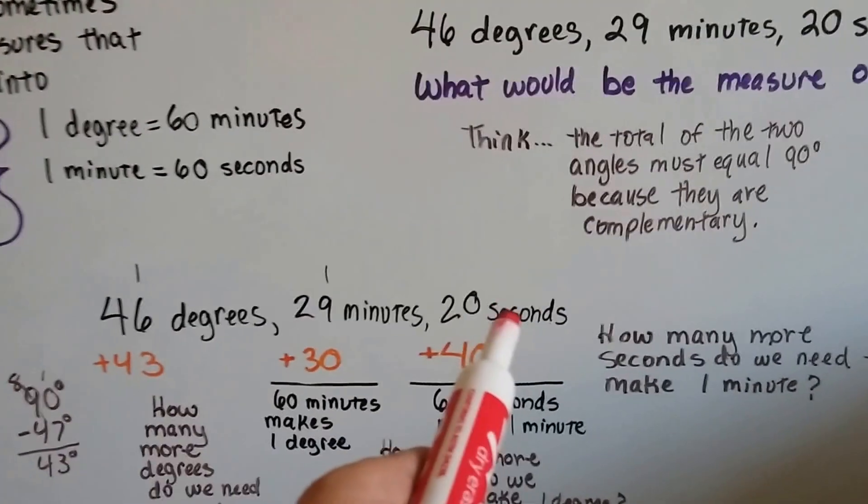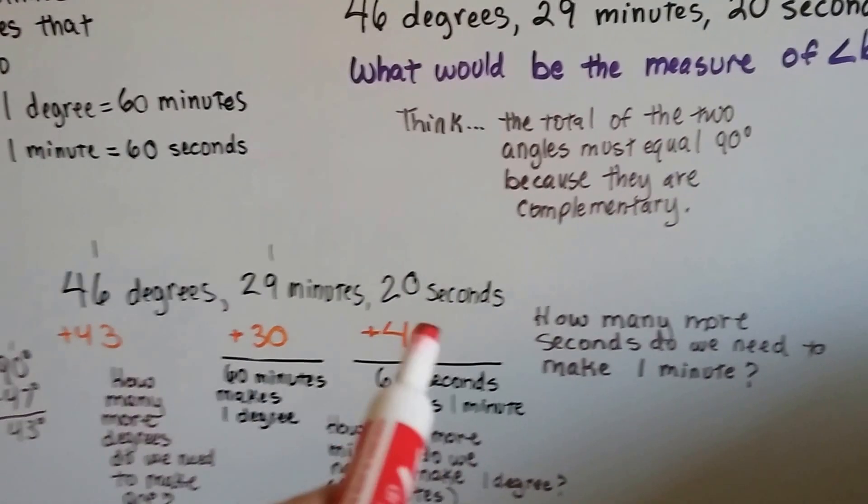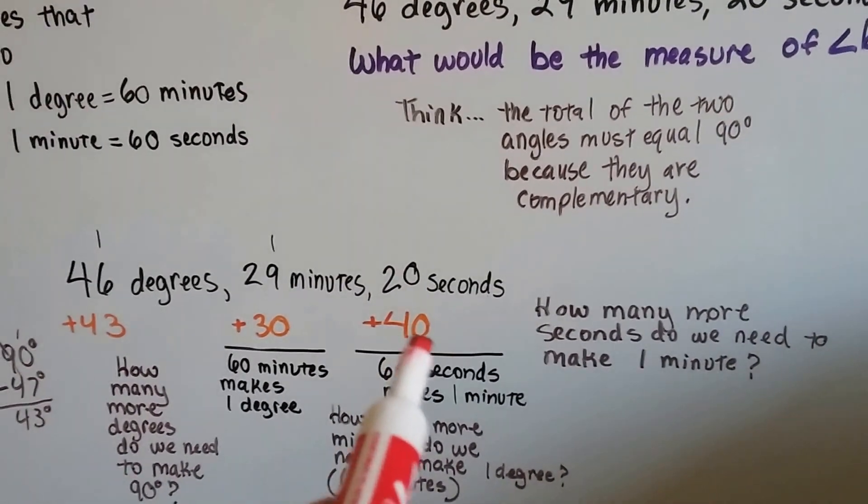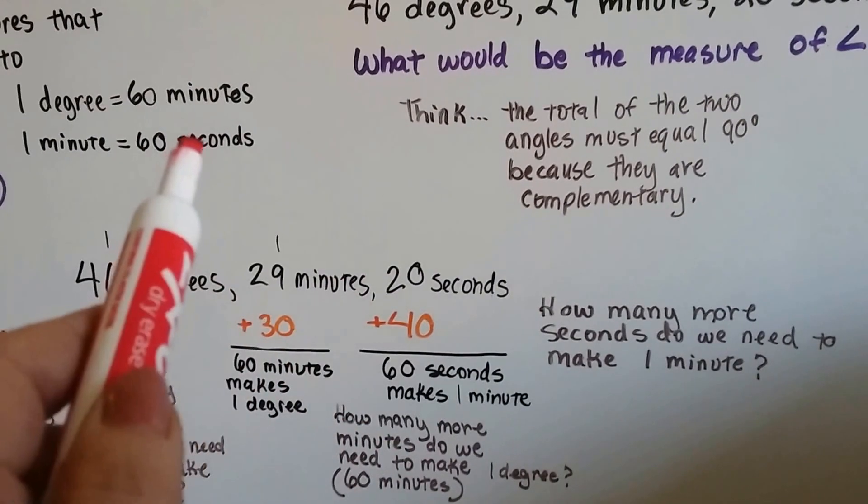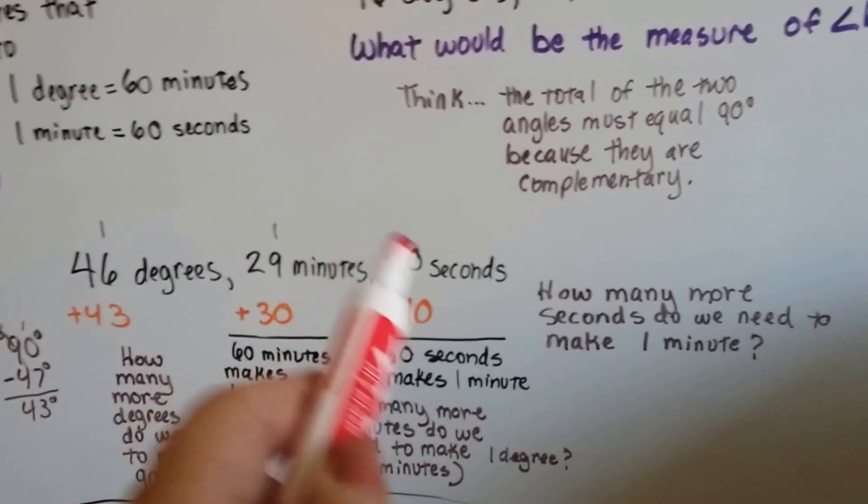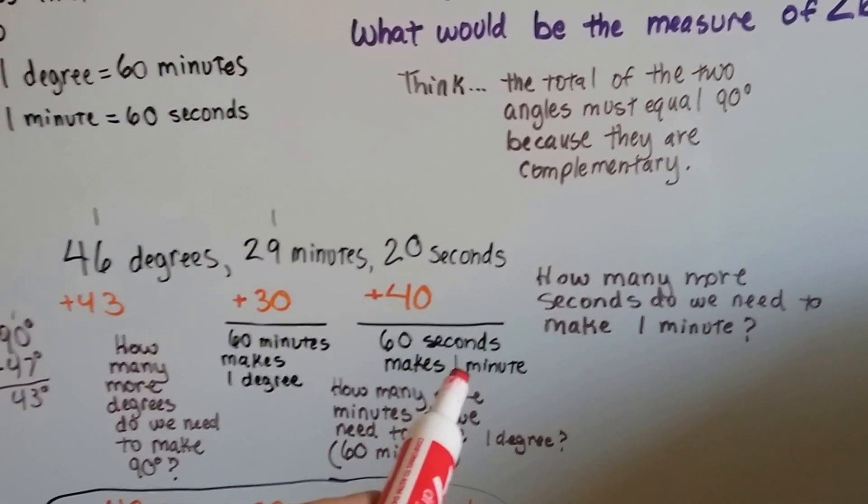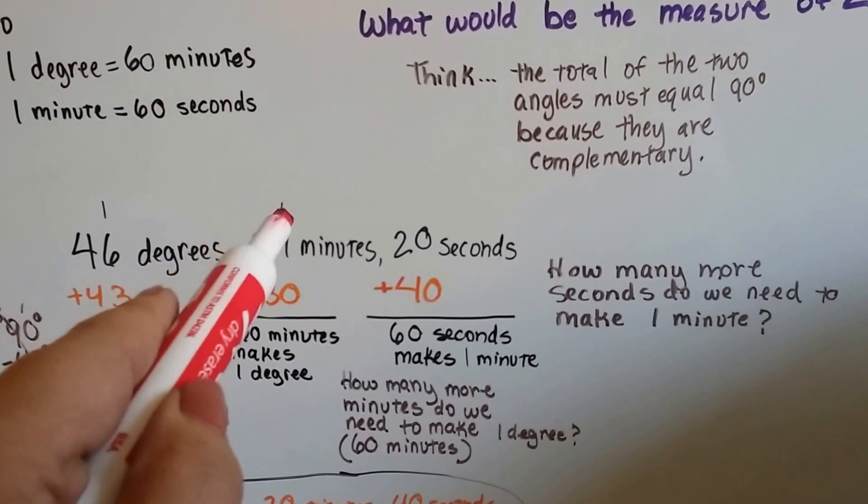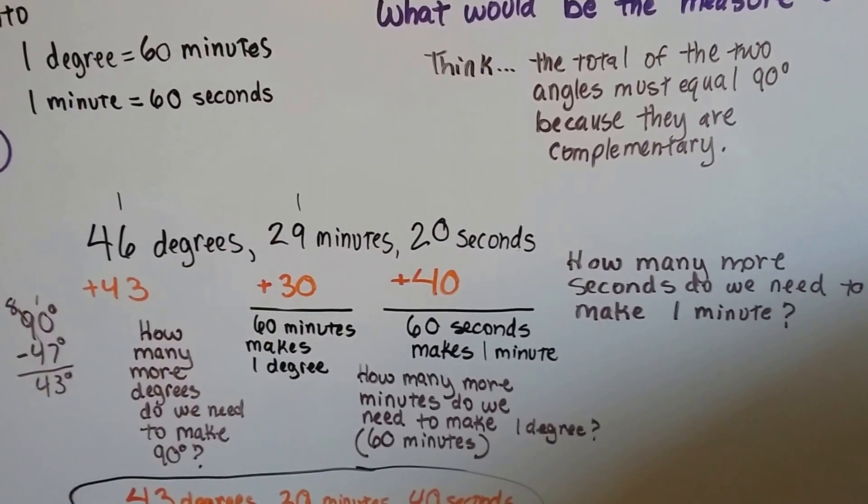So the first thing we do is we start with the seconds, and we ask ourselves, how many more seconds do we need to make that into a minute? Well, there's 60 seconds in a minute, so we need 40 more seconds. We total the 20 and 40, get our 60 seconds that make one minute, and we carry over that one minute to the 29 minutes.